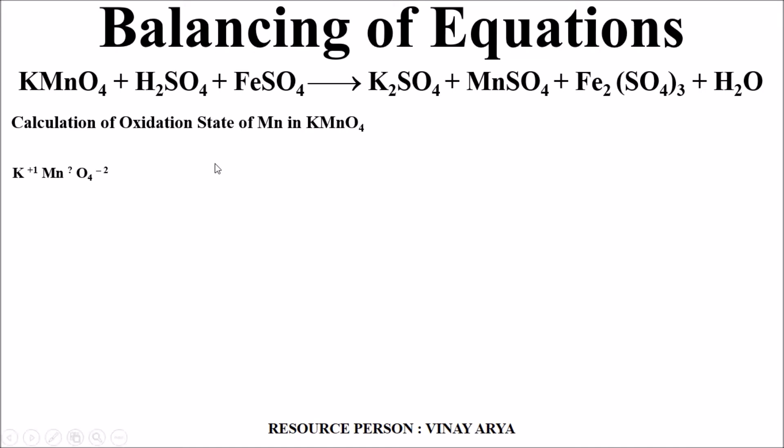Mn has variable oxidation state which we are going to calculate and we are assuming it to be x. Oxygen is fixed at -2 and 4 atoms of oxygen are in this molecule. Hence, +1 + x - 2×4 = 0. So, +1 + x - 8 = 0 and x becomes equal to 7. Now here, Mn is showing the oxidation state in KMnO4 as +7.